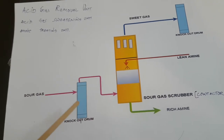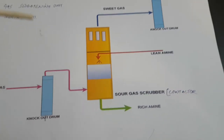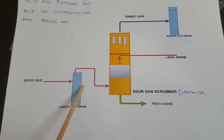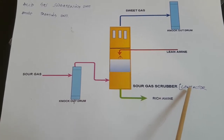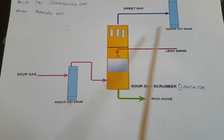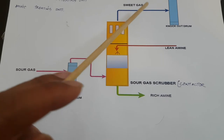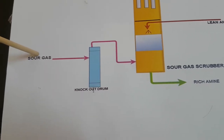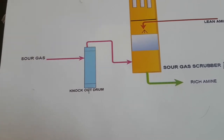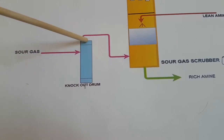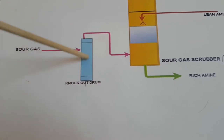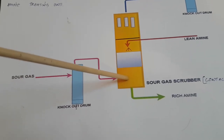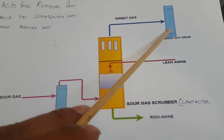This is the flow diagram of the sour gas treatment. We use different equipment such as a knockout drum, a sour gas scrubber or contactor, another knockout drum, a gas compressor, and a pump. The function of the knockout drum is to remove liquid or entrapped particles from the sour gas or natural gas as it flows through. Whatever liquid or condensed liquid is present gets collected and sent to a tank, while the gas free from liquid goes to the contactor.